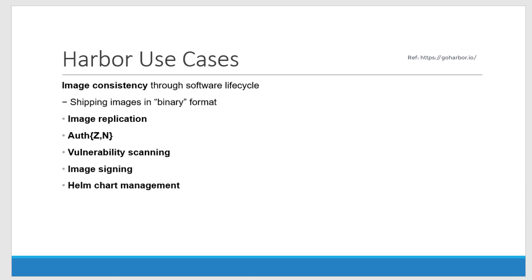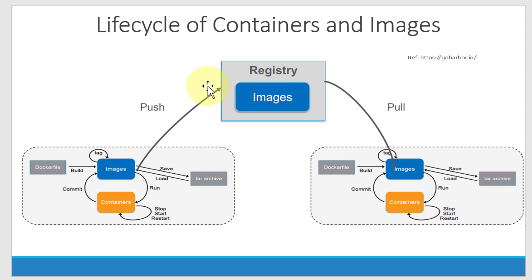This brings in specific use cases like maintaining consistent images across the software lifecycle, shipping images as binaries, making them available through replication across different zones, providing authentication and authorization, performing vulnerability scanning, and ensuring images are trusted by signing them. You can also manage different versions and configurations of Helm charts within projects. This gives a high-level picture of where Harbor fits in and its purpose.